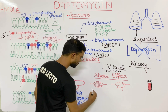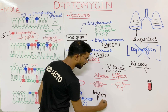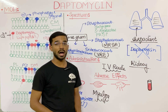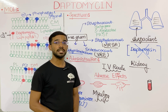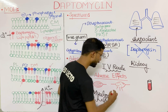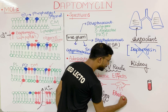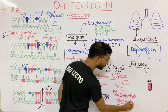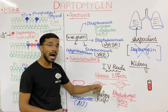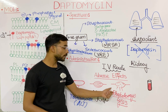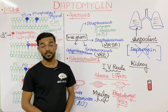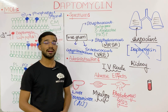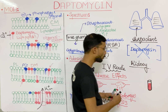The next adverse effect is myalgia — muscle pain. Most importantly, daptomycin can induce rhabdomyolysis, which is the breakdown of muscles. To detect rhabdomyolysis, we can check with a blood test measuring creatine phosphokinase (CPK).